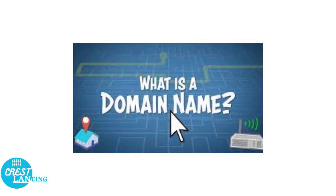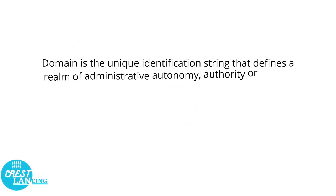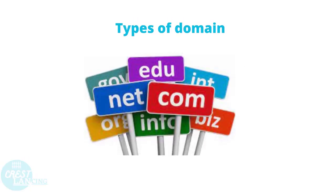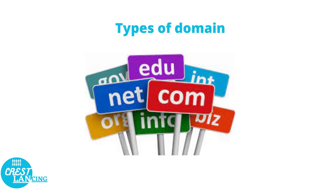What is a domain name? For a website to be online, it needs a domain name — something you type online, like abafrica.com, for the site to be accessible. A domain name is the unique identification string that defines the realm of administrative autonomy, authority, or control within the internet. Simply put, it is the unique name of a website — like facebook.com. Types of domains include .net, .org, .biz, .com, and others you can choose for your website.